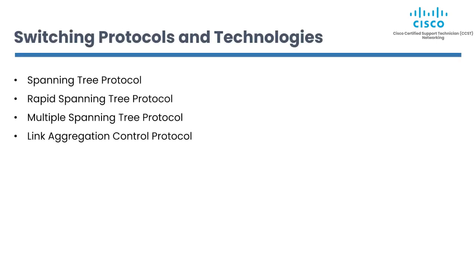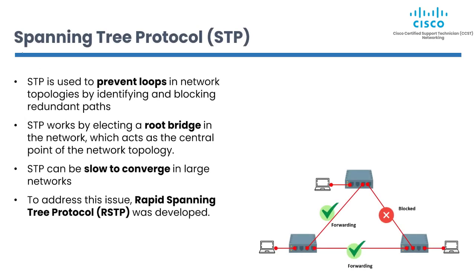Switching protocols and technologies are critical components of network communication that determine the performance, stability, and reliability of network traffic. We're going to talk about important switching protocols such as STP (spanning tree protocol), RSTP (rapid spanning tree protocol), multiple spanning tree protocol, and link aggregation control protocol. STP is used to prevent loops in network topologies by identifying and blocking redundant paths. STP ensures that there is only one active path between any two network devices, improving network stability and preventing packet loss.